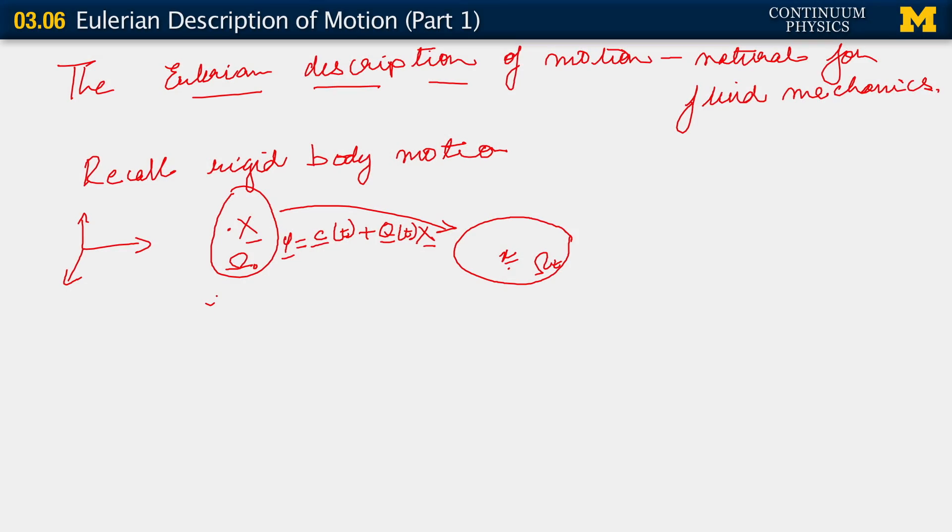Now we're going to write out our Eulerian descriptions. But in order to construct them and demonstrate that they are the same, we're going to start out with the Lagrangian description in each case and then go to the Eulerian description. So let's consider the Lagrangian velocity first, which is V parametrized by X comma time equals c dot plus Q dot X. I'm going to dispense with the explicit indication of the time dependence of the vector c and the tensor Q just to save some space here.